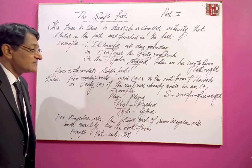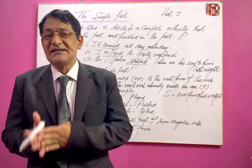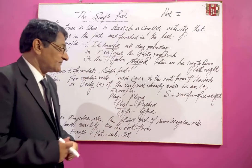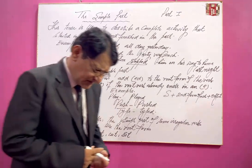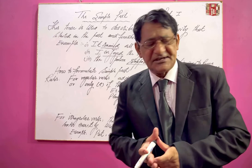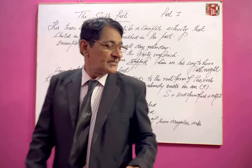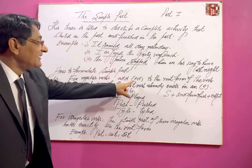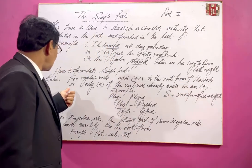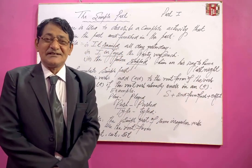How do we formulate the simple past tense? The formula is quite easy and simple to understand. For regular verbs — those whose second or third form can be made by adding 'd' or 'ed' — we add 'ed' to the root form of the verb, or only 'e' if the root verb already ends in an 'e'.